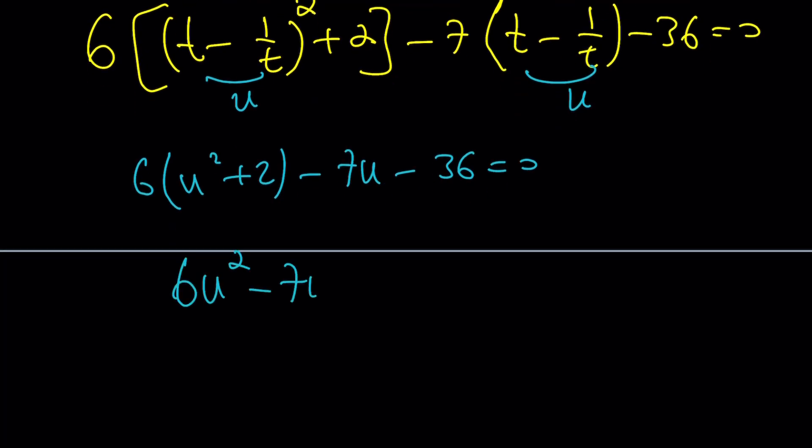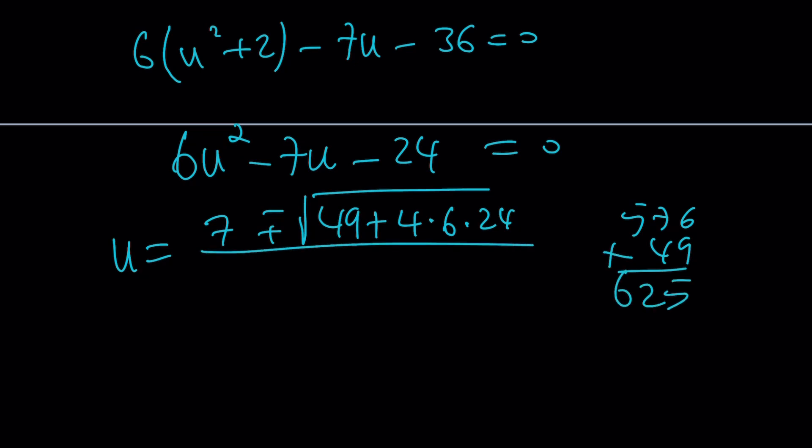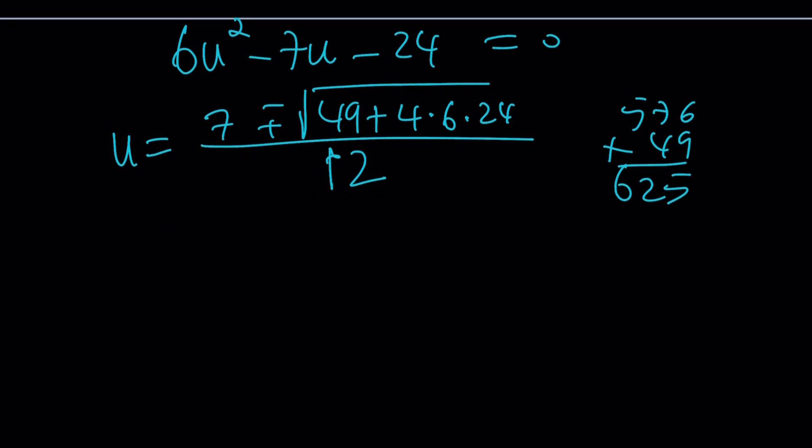6U squared minus 7U plus 12 minus 26. That's going to be a minus 24 equals 0. And I'm hoping to get something nice from here. Hopefully, right? U is going to be negative B, 7, plus minus the square root of B squared, 49, minus 4AC. That's going to be a plus sign. Plus 4 times 6 times 24. 24 times 24 is just going to be 576. If I add 49, please come up with a nice number. 625. Yay! That's 25 squared. Beautiful. And this is going to be 6 times 2, which is 12.